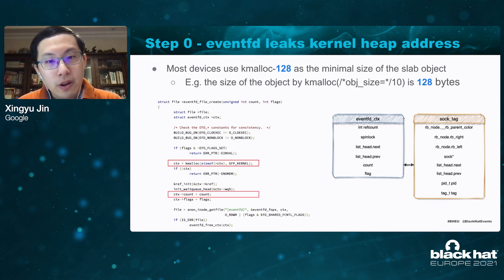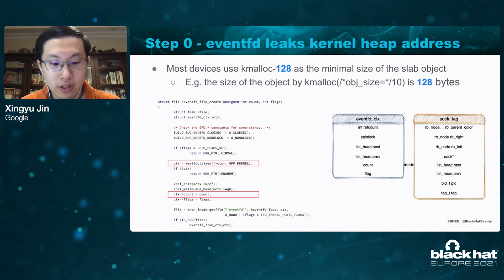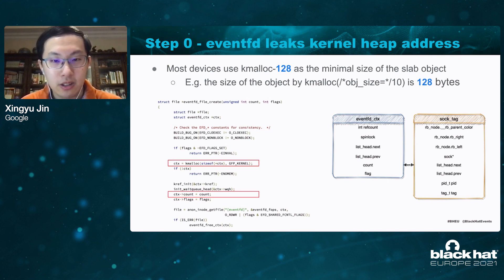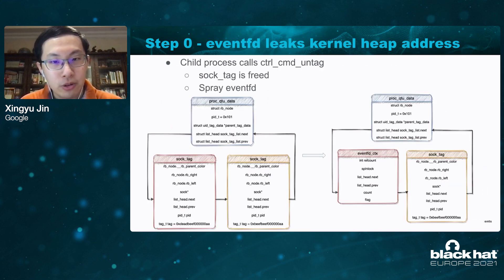If you are not very familiar with Android kernel exploitations, we use kmalloc-128 as the minimum size of the soc_tag object, so the size of the object allocated by kmalloc is actually 128 bytes. The first syscall we want to abuse is eventfd. The member count overlaps the list_head in the soc_tag structure. The idea for performing a kernel heap leak is that while soc_tag is already freed, we spray eventfd to make sure an eventfd structure occupies the freed soc_tag structure.